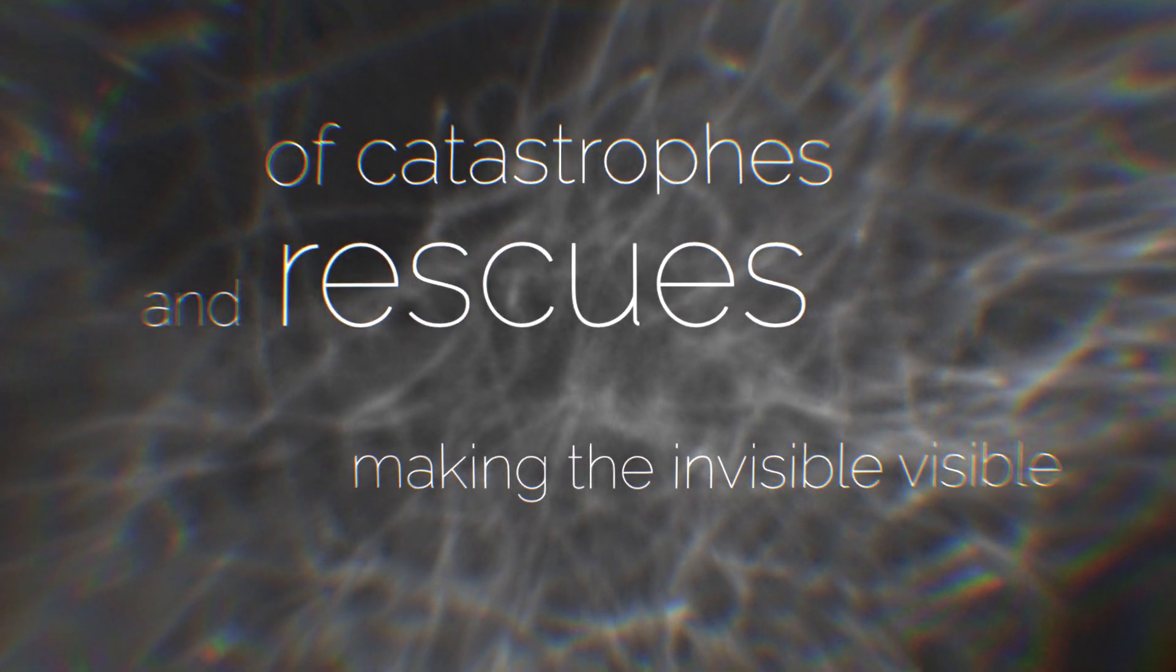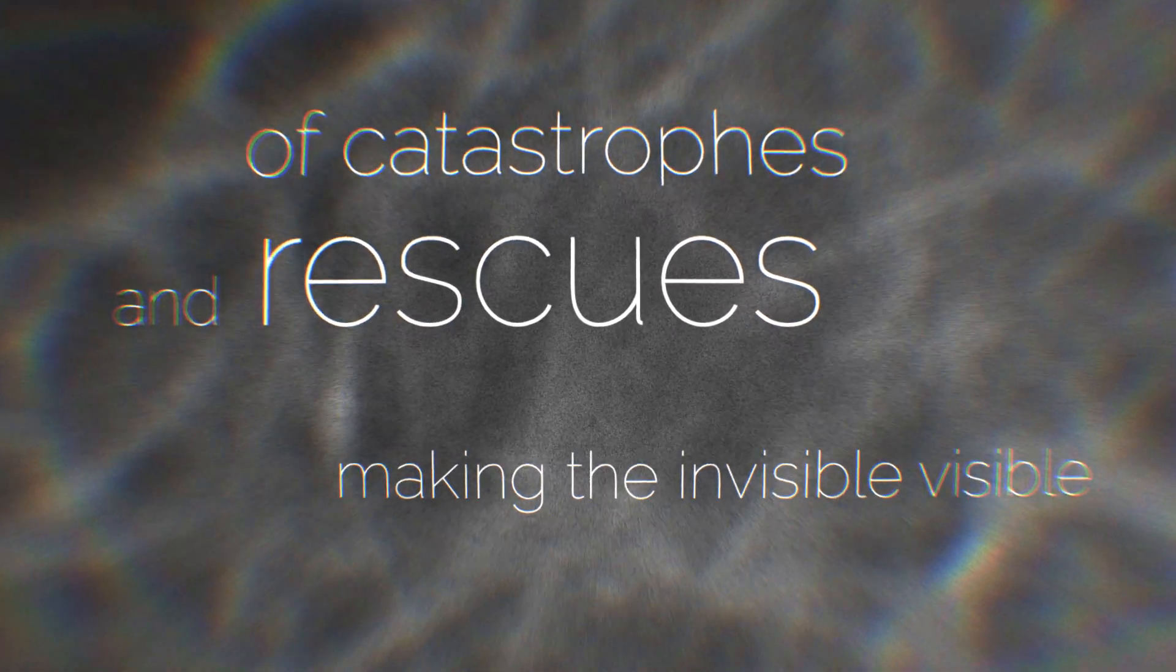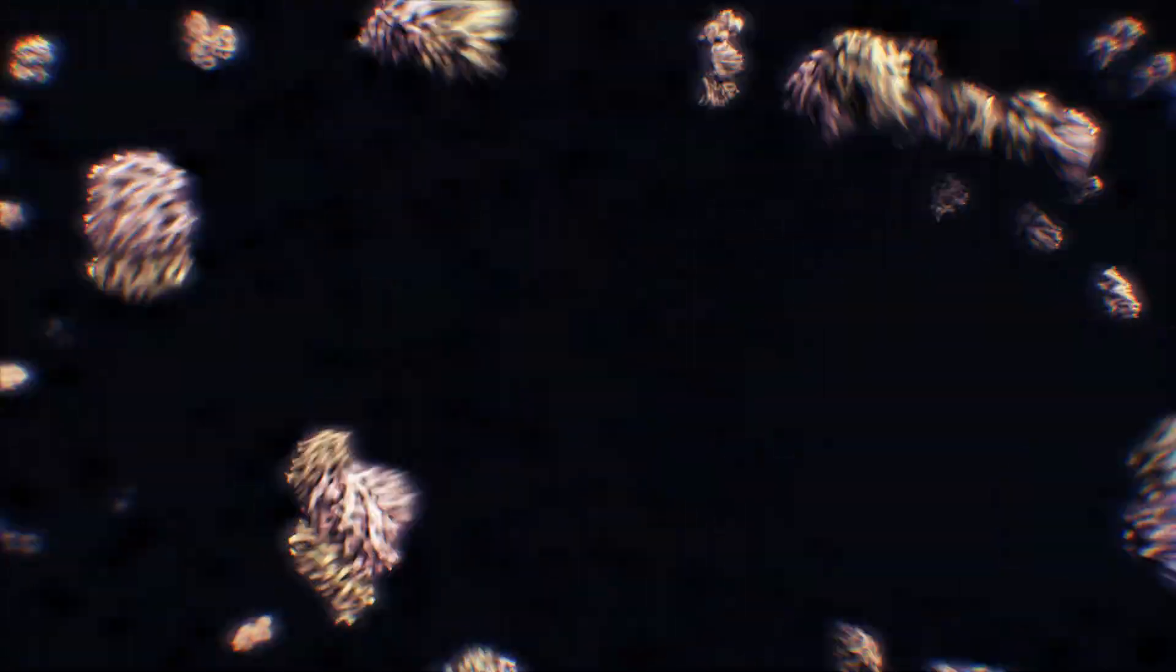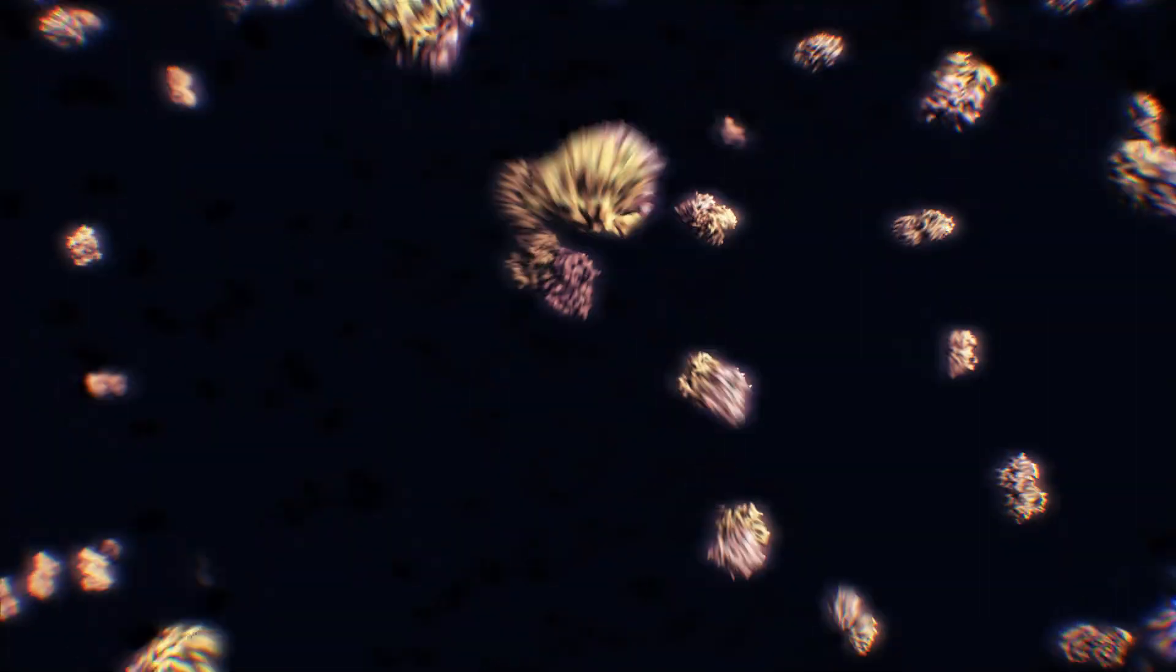To understand what drives dynamic instability, we would have to zoom in far enough to see the individual molecules. Molecules cannot be seen because they are smaller than a wavelength of light. We can show abstracted versions of them using computer visualization.